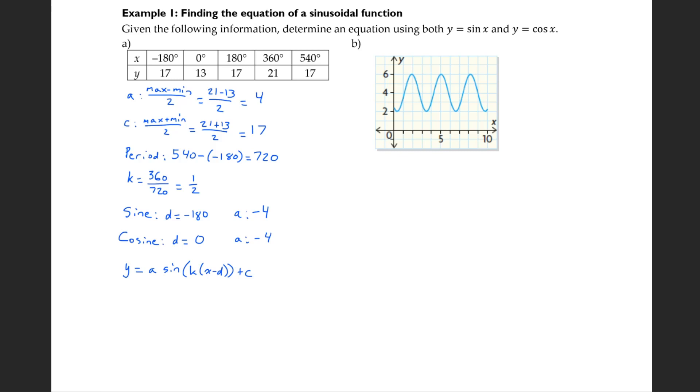But I already have a and d, so I'm just going to write out the equations. Y equals negative 4 sine bracket a half bracket x plus 180, because remember negative negative, plus 17. Meanwhile, cosine is negative 4 cos half x plus 17. Since there's no d, the brackets aren't necessary.